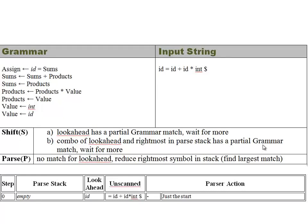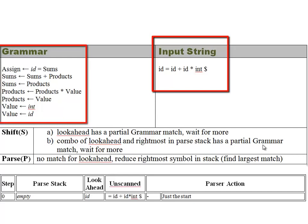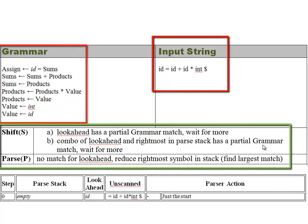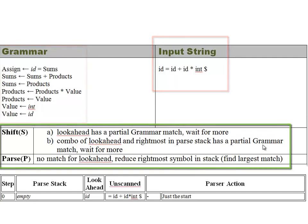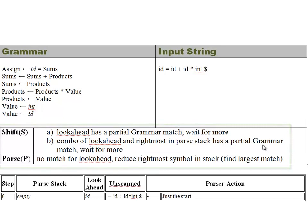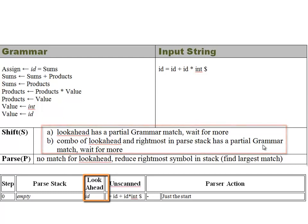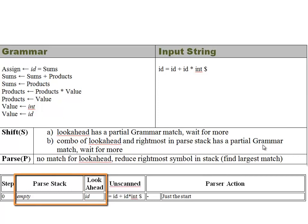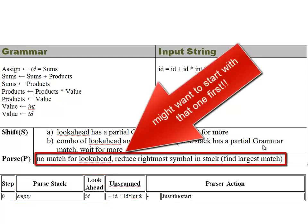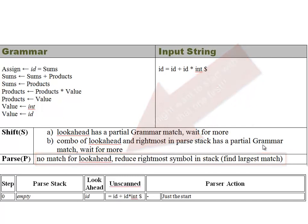Here is an example of a shift-reduce parser at work, given the grammar and input string. I want to focus on the shift and reduce conditions. For shift, labeled S, there are two possible conditions: first, the look-ahead has an already partial grammar match and we wait for more and shift; or it's a combination of the look-ahead and the rightmost symbol in the parse stack. If there's absolutely no match for the look-ahead, we reduce the rightmost symbol in the parse stack, finding the largest match.